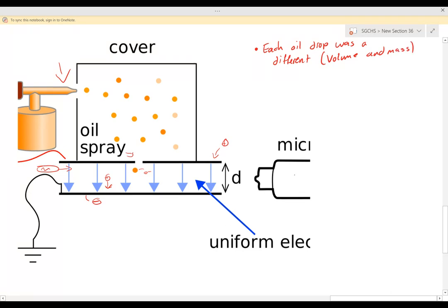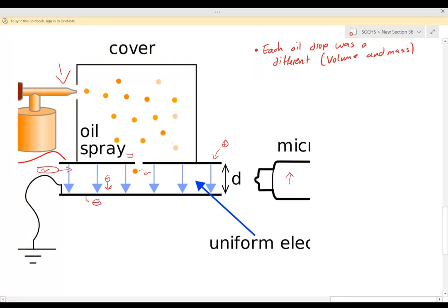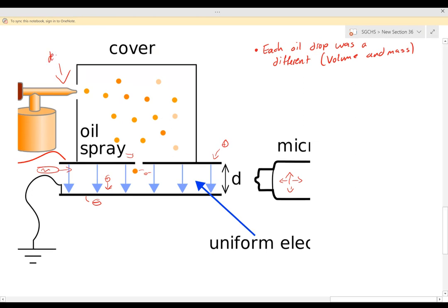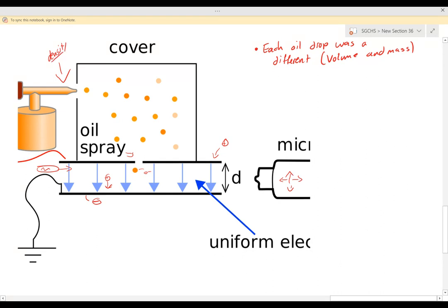He was able to determine the mass because he had this microscope here. This microscope allowed him to zoom in on a specific oil drop and determine the diameter. From the diameter, he could determine the area and the volume, and what he knew about this oil was he knew the density of the oil. So from there he could solve for the mass.